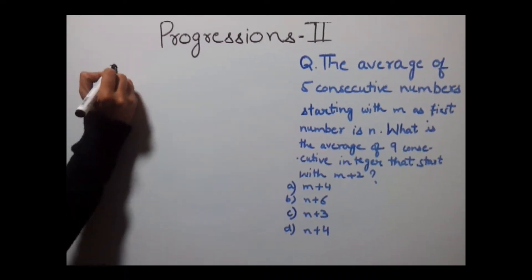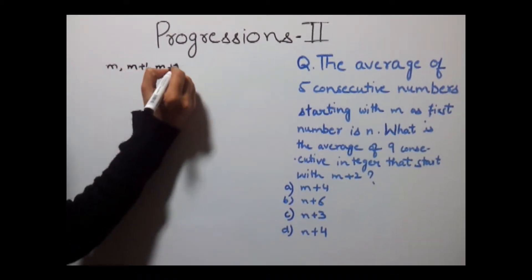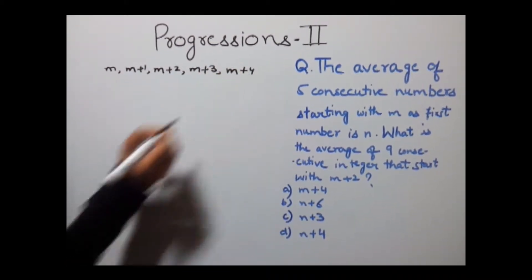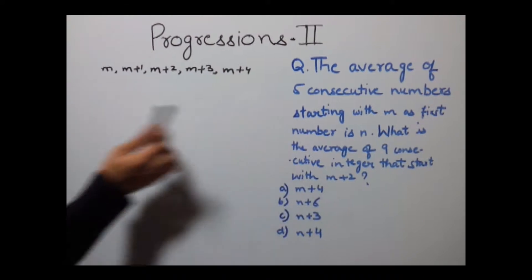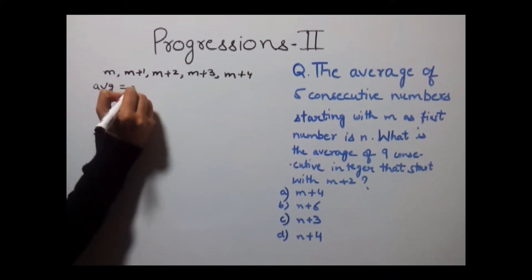Those numbers would be m, m+1, m+2, m+3, and m+4, whose average is given by n, that is average equals n.